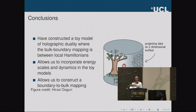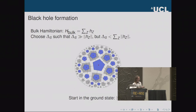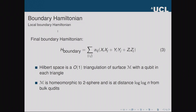Q: I was wondering — you showed the boundary Hamiltonian explicitly, and I see it's frustrated, but is anything known about the gap of that Hamiltonian? A: The gap of the Hamiltonian will depend on the gap of the bulk Hamiltonian, because this is a simulation. Below the energy cutoff ΔS, the spectrum of the boundary matches the spectrum of the bulk, so the gap can basically be whatever you choose by choosing your bulk Hamiltonian.